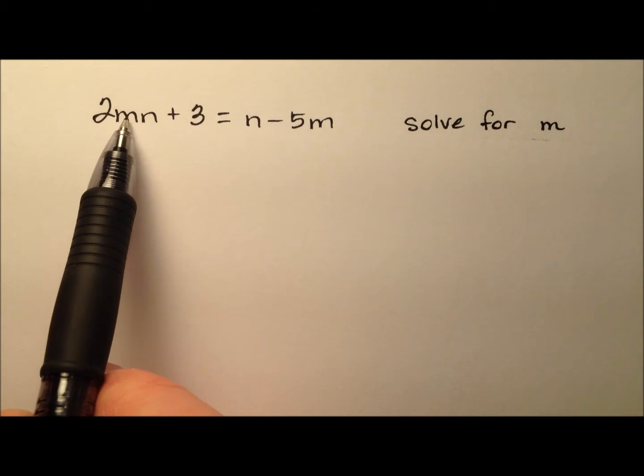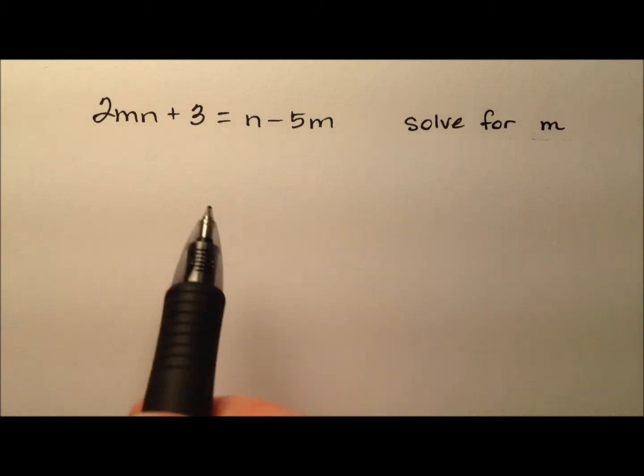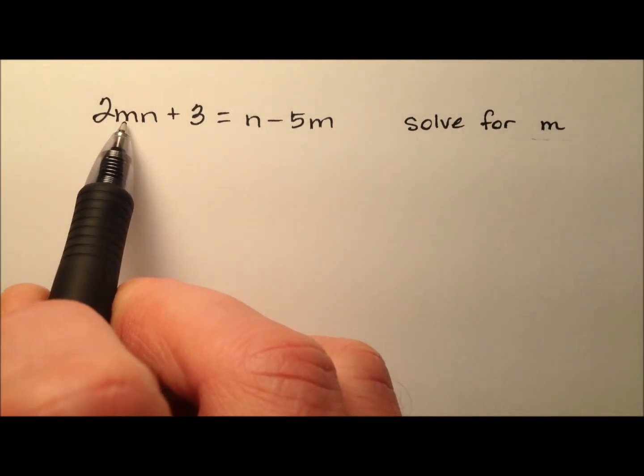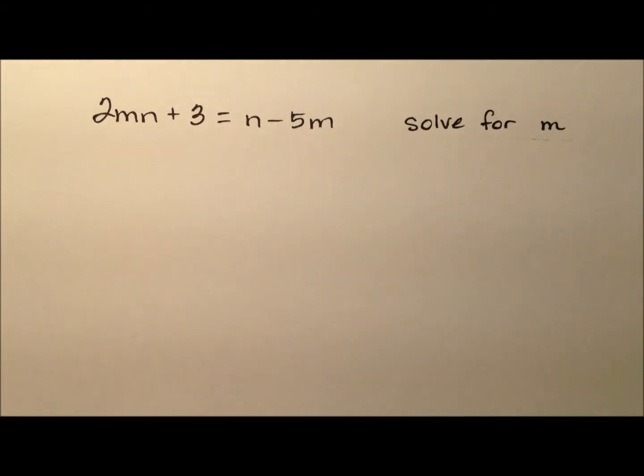So we need to get all these m terms on one side of the equation and all the other terms on the opposite side of the equation. So let's go ahead and collect the terms that include an m on the left side and we'll get the other ones on the right side.